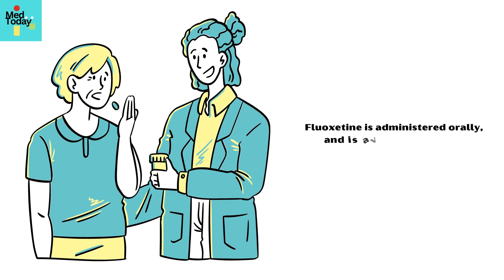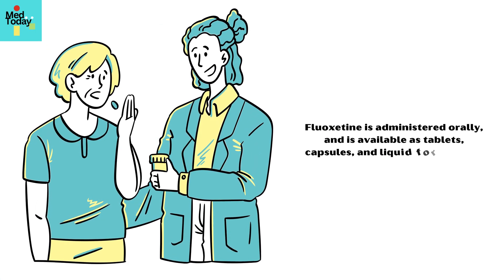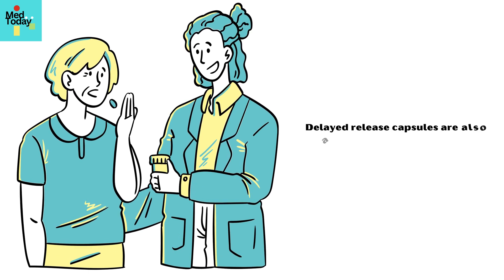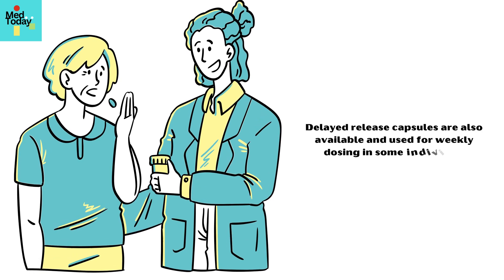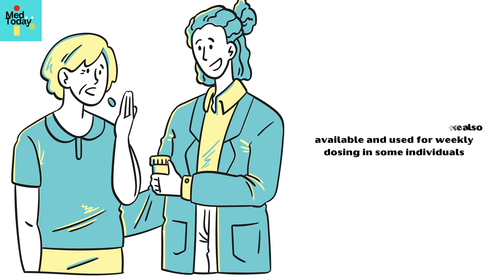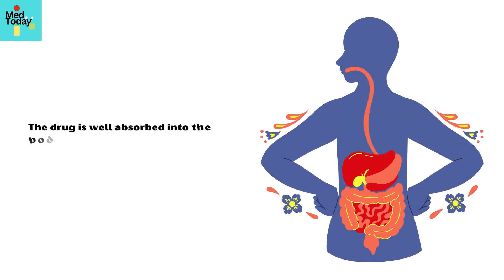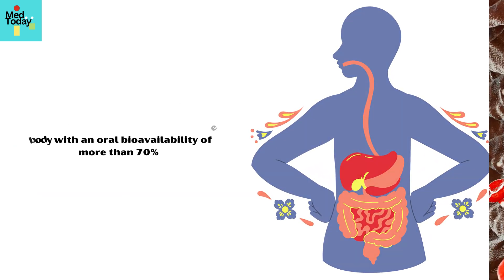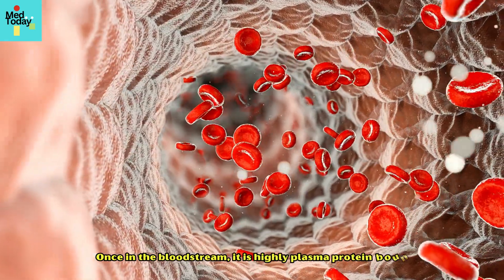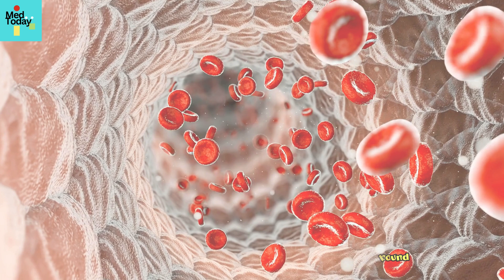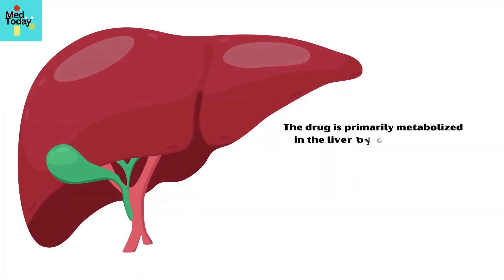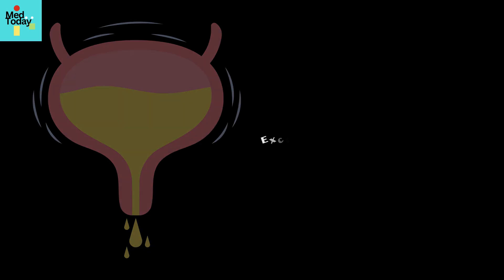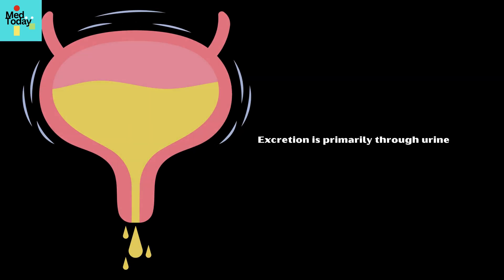Fluoxetine is administered orally and is available as tablets, capsules, and liquid formulations. Delayed release capsules are also available and used for weekly dosing in some individuals. The drug is well absorbed into the body with an oral bioavailability of more than 70%. Once in the bloodstream, it is highly plasma-protein bound. The drug is primarily metabolized in the liver by converting into active metabolite norfluoxetine. Excretion is primarily through urine.